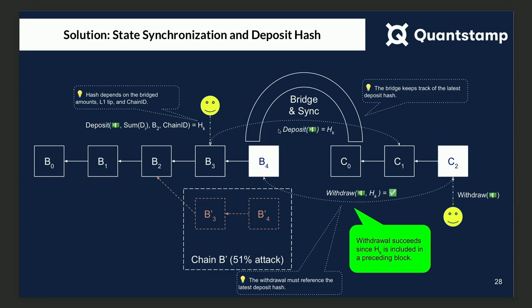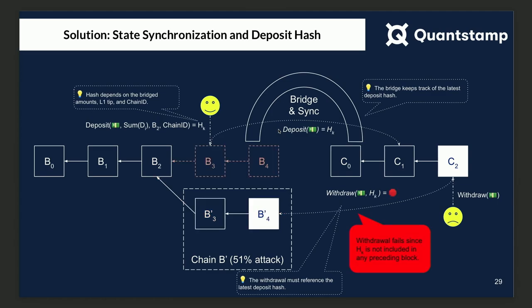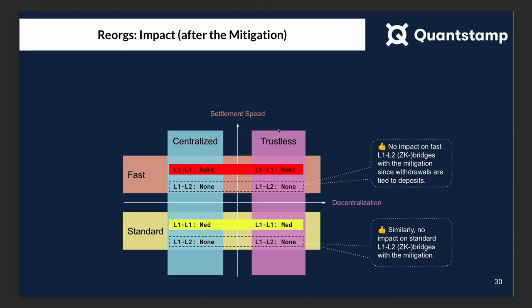That would be verified by the smart contract that unlocks the tokens. Now look at what happens on the 51% attack chain — I still have the same smart contract that verifies the hash, but the hash from the original deposit is not there, so this withdrawal will fail. By using this mechanism, we can protect against illegitimate withdrawals in the presence of chain reorgs. This mitigation means L1 to L2 bridges are protected, and it works for both fast bridges and slow bridges.